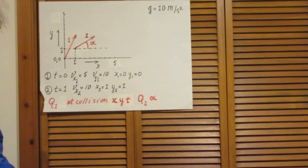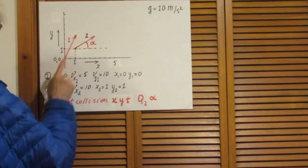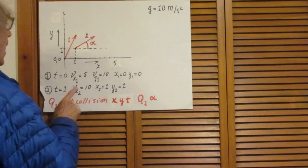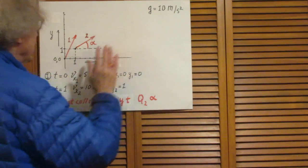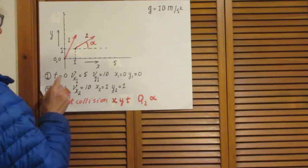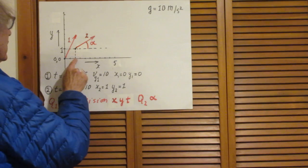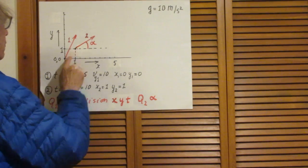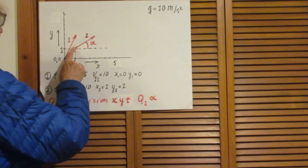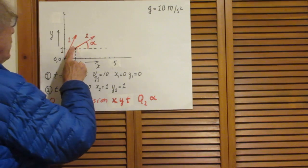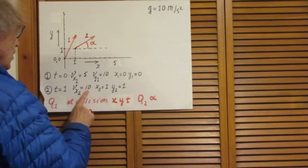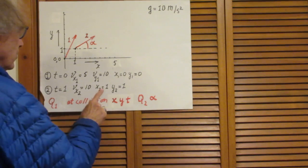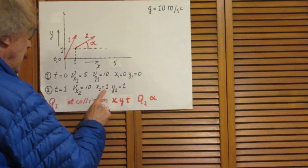I wait one second, so at t equals 1 I throw up another rock in exactly the same plane, but I throw it up from position X equals 1 and Y equals 1, and I give it a speed in the X direction which is 10. So at t equals 1, the second rock is at X1 and Y1 and the horizontal speed is 10 meters per second.